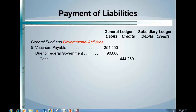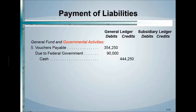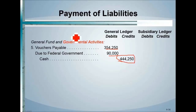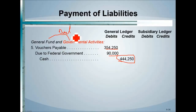For payment of liabilities, we have a balance of vouchers payable and a $90,000 amount due to the federal government at the end of 2016. The payable is reduced and cash is reduced — this entry happens the same way in both the general fund and the government-wide statements. When entries are identical in both, they'll be lined up together rather than separated.